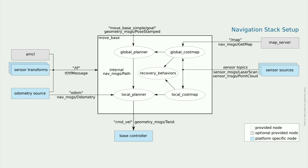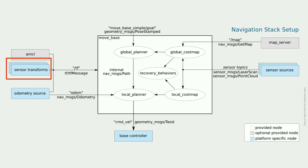Let's analyze the diagram shown closely. We start off on the right. We typically have multiple sensor sources on a mobile robot. Sensors are used in the navigation stack to detect obstacles and also during localization. Moving on to the sensor transforms — the data captured by different robot sensors must be referred to a common reference frame. In most cases, we use the base link. The robot must publish the relationship between the main robot coordinate frame and the different sensor frames using ROS transforms.